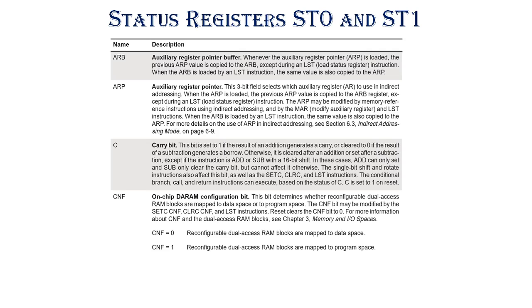ARB and ARP are the auxiliary register fields. ARB is the auxiliary register pointer buffer. Whenever the auxiliary register pointer, that is ARP, is loaded, the previous ARP value is copied to the ARB, except when using LST, the load status register instruction.